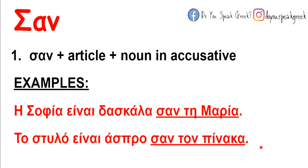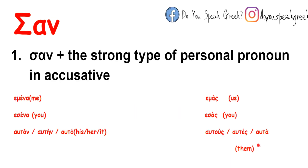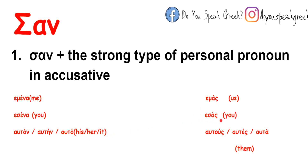If we want to use σαν with a personal pronoun, for example 'like me', we always need the accusative of the strong type of personal pronouns. The strong type means: εμένα, εσένα, αυτόν, αυτήν, αυτό, εμάς, εσάς, αυτούς, αυτές, αυτά.